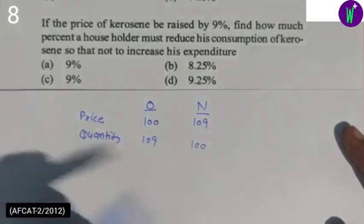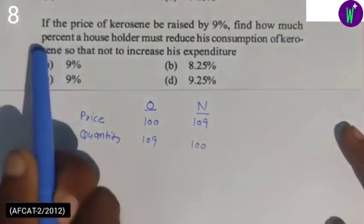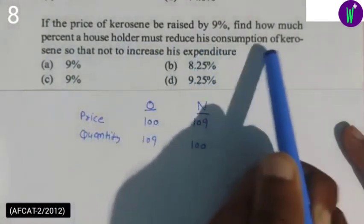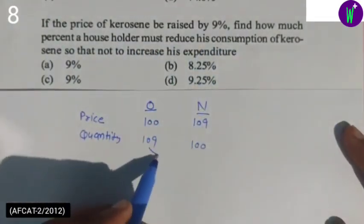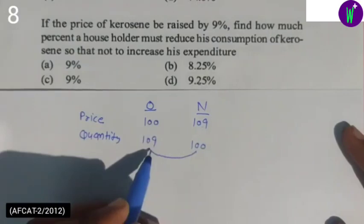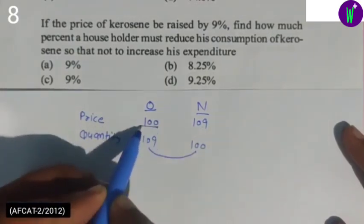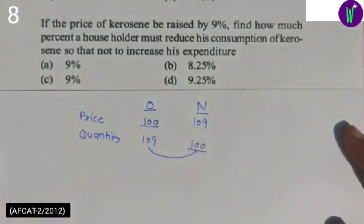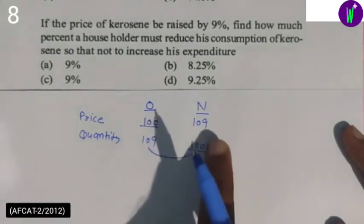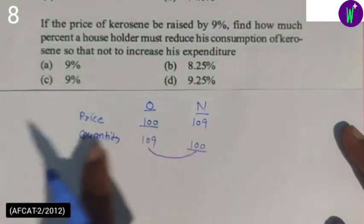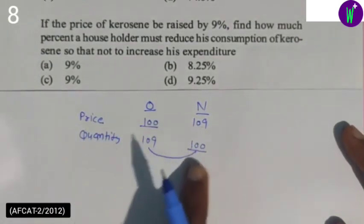What we need to find is how much percent a householder must reduce his consumption. The consumption or quantity needs to change. What was the original quantity? Let's say it was 100 units.